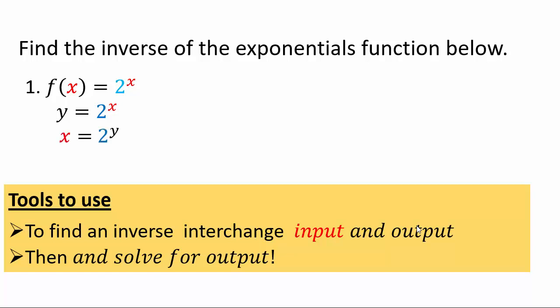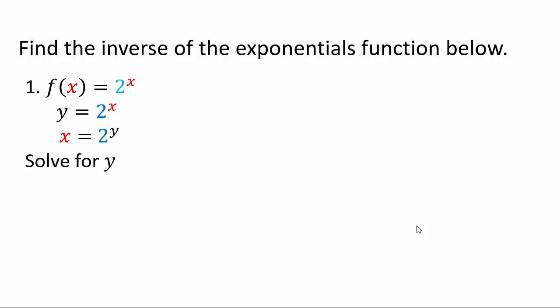What you would have gotten is x equals 2 to the y — we interchange x and y, or input and output. Now we want to solve this equation for y, but you'll notice that the y is in the exponent. We have no way of solving this. We can take y through it, but what does that mean since y can be any real number? So if you want to solve for y, we are kind of stuck.